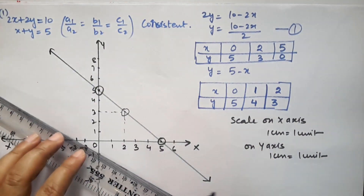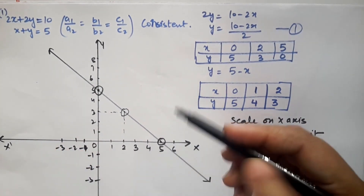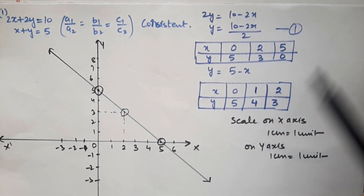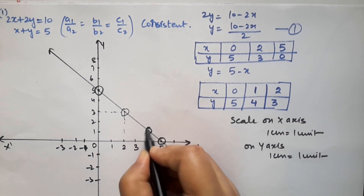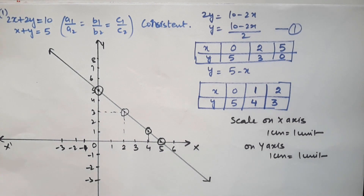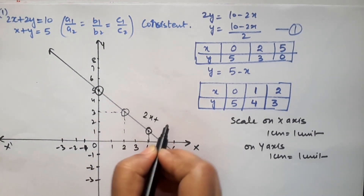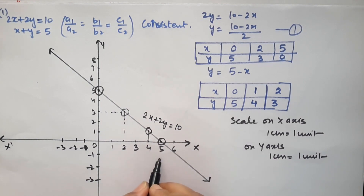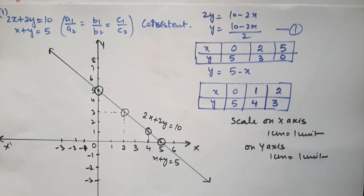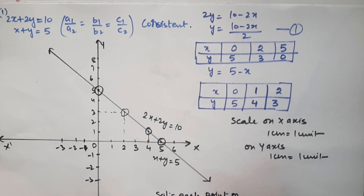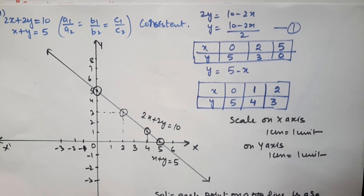We can see that equation 2 has the same points: (0, 5), (2, 3), and (1, 4) all lie on the same line. When we draw both lines, they appear as a single line because all points are common to both equations. The lines are coincident. So 2x + 2y = 10 and x + y = 5 represent the same line, with infinitely many solutions — every point on the line is a solution.